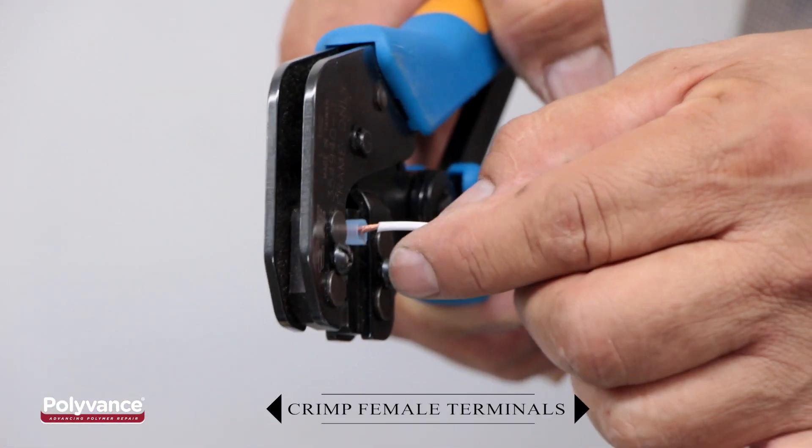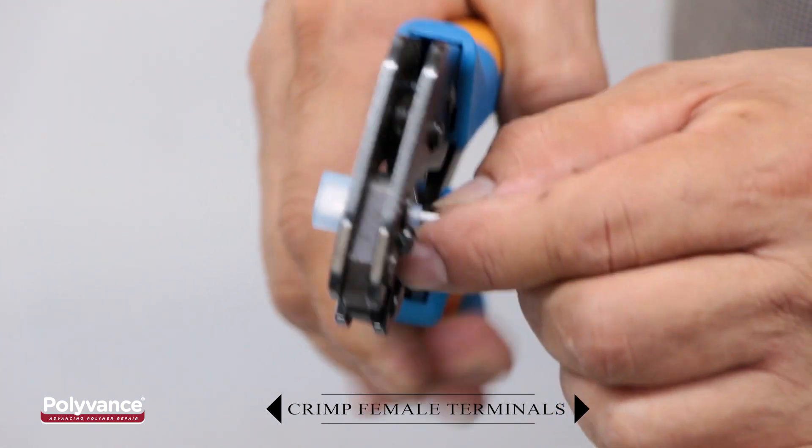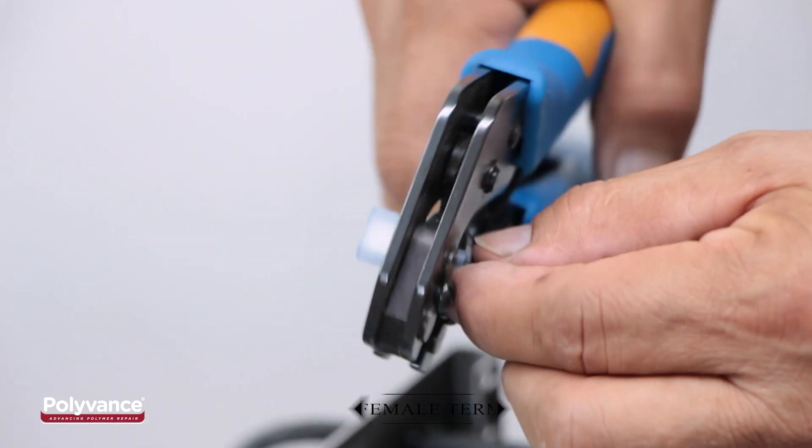Crimp three female spade terminals onto the white, green, and black wires from inside the welder.